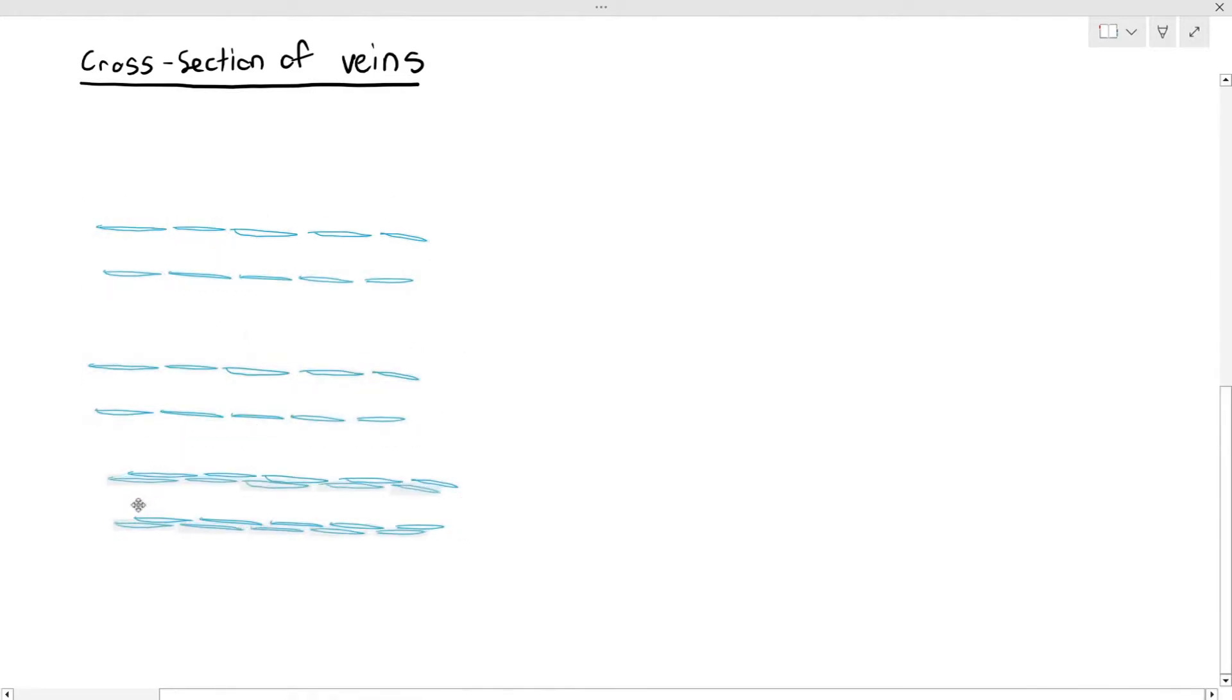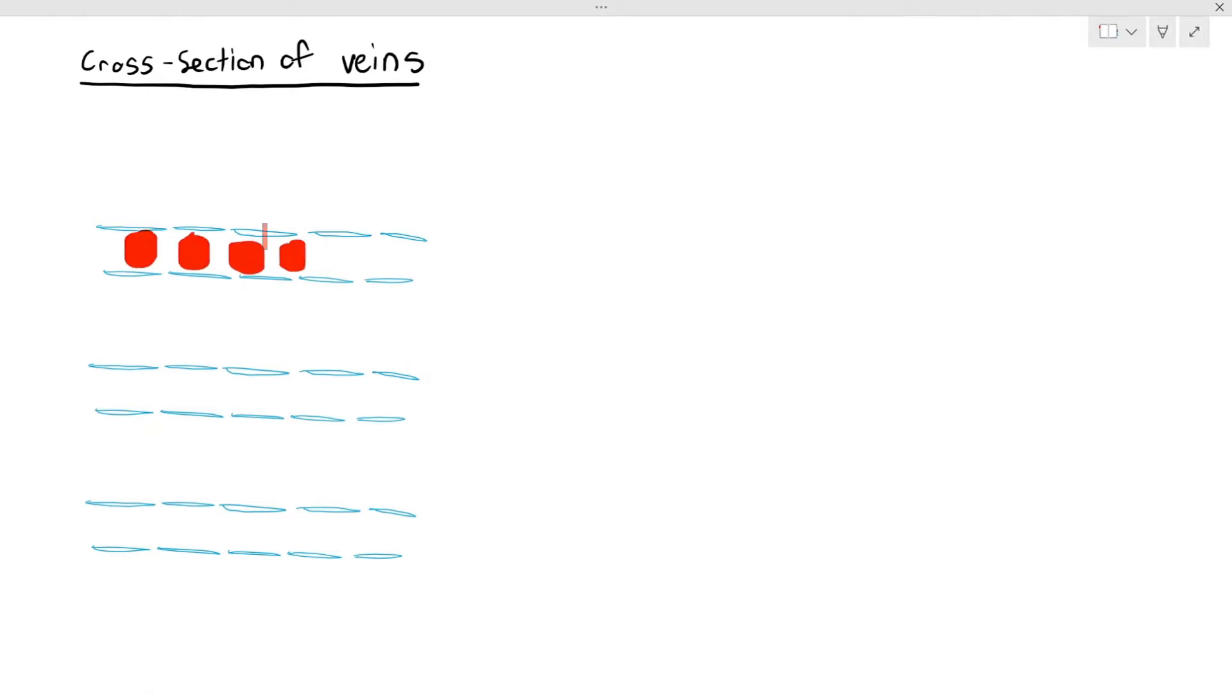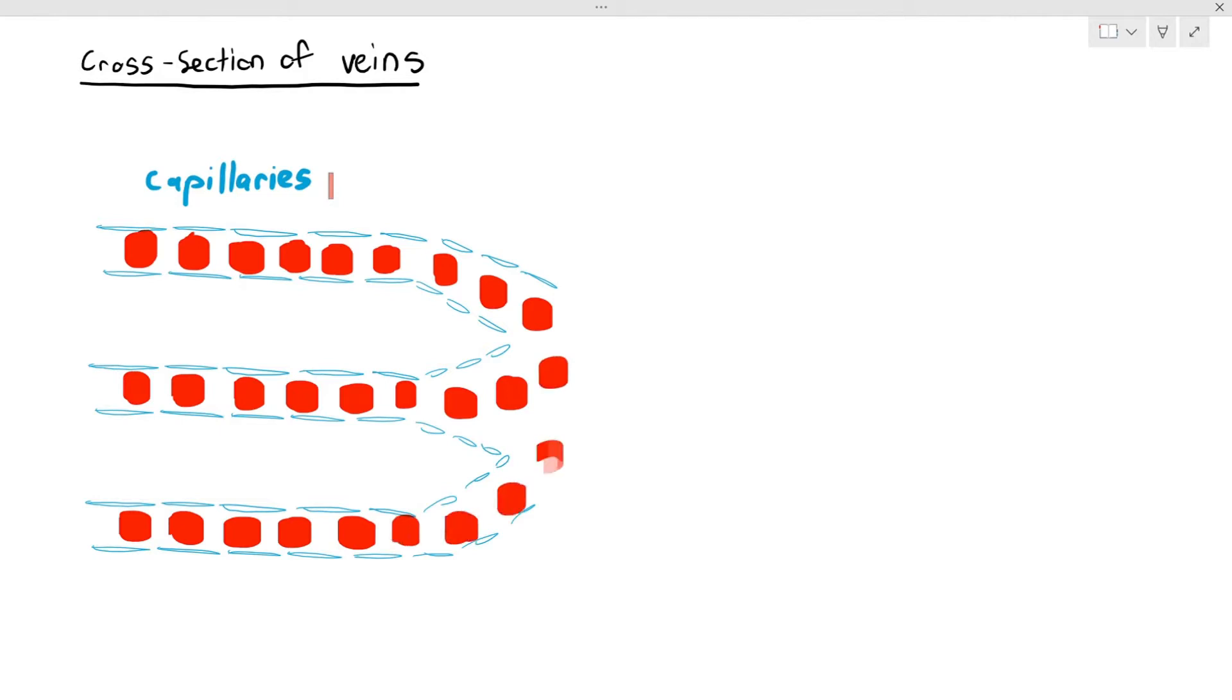Before we look at the structure of the veins in detail, I want to talk a little bit about the capillaries. Now if you remember, the capillaries are just one cell thick and they also have a very narrow lumen. The lumen is so narrow, which is 7 micrometers by the way, the lumen is so small that it can only fit one red blood cell. The red blood cells can only travel in a single line. So in that case, when the red blood cells are moving, they will be moving quite slowly because they want to allow exchange to happen.